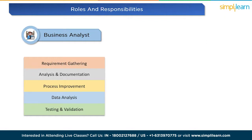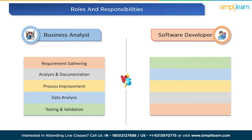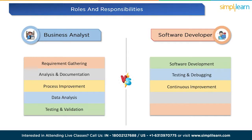The roles and responsibilities of a software developer differ significantly. Key responsibilities include software development — writing clean and efficient code for applications, systems, or websites, requiring proficiency in various programming languages and frameworks. Testing and debugging — conducting rigorous testing and debugging to ensure functionality and reliability, helping identify and fix issues before deployment. Continuous improvement — staying updated with the latest technologies and development practices. Collaboration — working closely with other developers, designers, and stakeholders to deliver high-quality software. Problem-solving — finding innovative solutions to complex technical challenges.